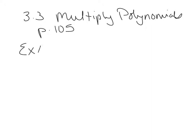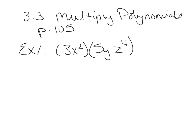For example 1, we have multiply 3x squared times 5yz to the 4th. First of all, we're going to talk about these types of polynomials. This is one term, so it's a monomial. This is also all one term. I can tell that these are monomials because there are no plus and minus signs. The plus and minus signs is what separates the terms. So these are monomials — monomial times a monomial.